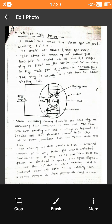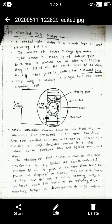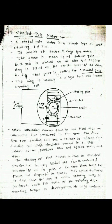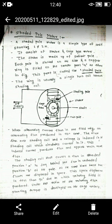This is called a shaded pole induction motor. The shaded pole induction motor is a simple type of self-starting single-phase induction motor. It consists of a stator and rotor. The stator is made up of salient poles. Each pole is slotted on the side and a copper ring is fitted on the smaller part, which is called the shaded pole, shown by letter A. This ring is a single-turn coil known as a shading coil.